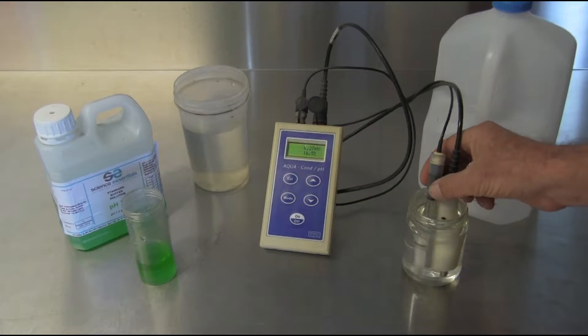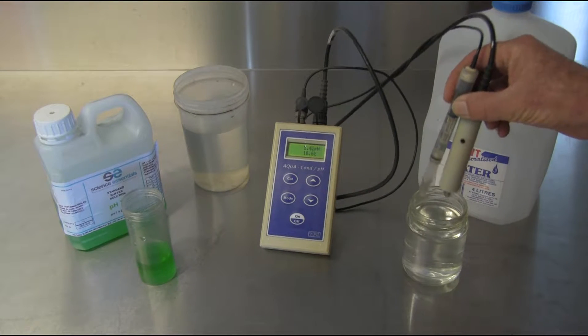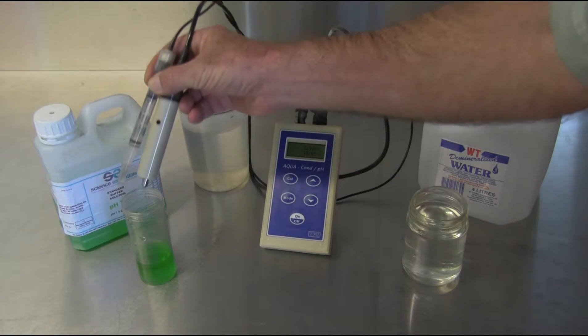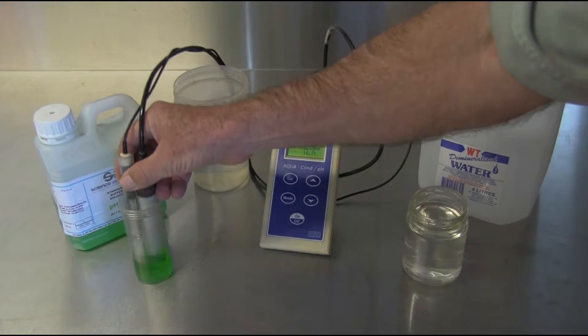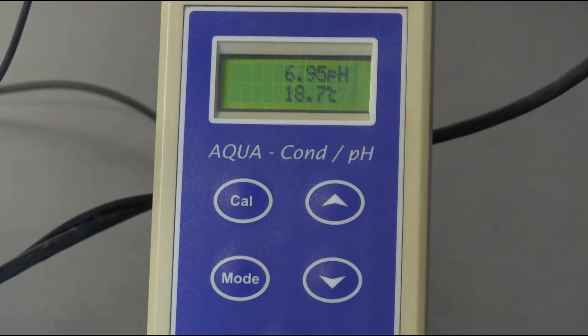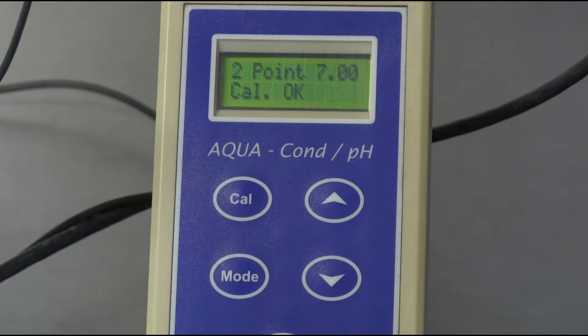If only a one-point calibration is performed, a buffer should be selected about midway within the range of readings likely to be encountered during testing. For additional accuracy, some meters have the capacity to complete a three-point calibration. Most modern meters have the capacity to recognize the value of the buffer or standard being used and to automatically calibrate to each solution, simplifying the calibration process.